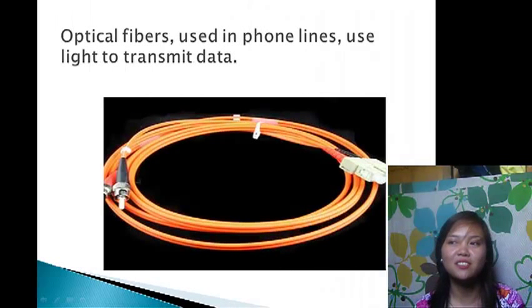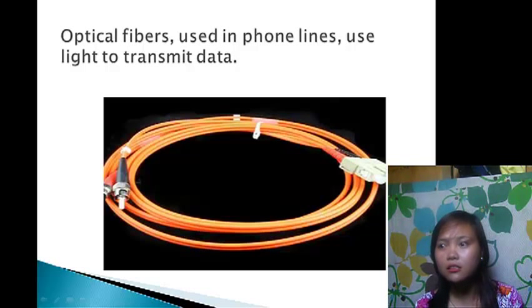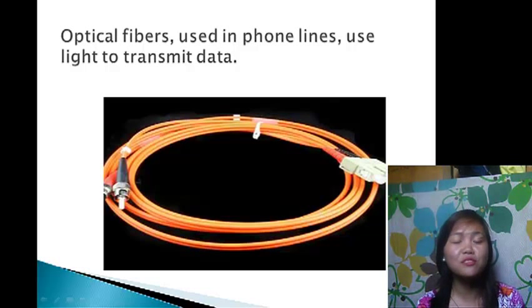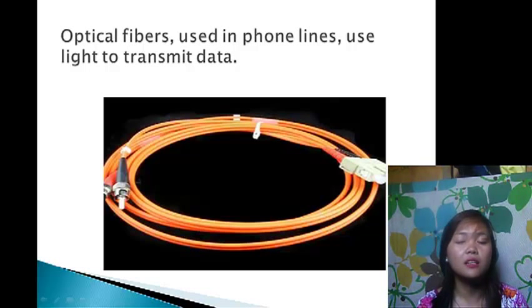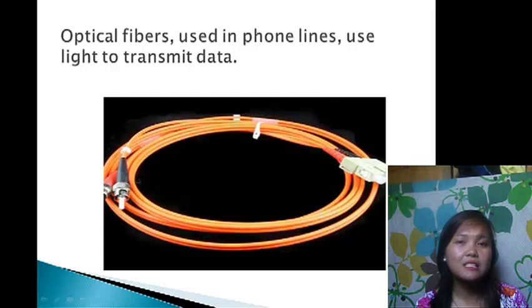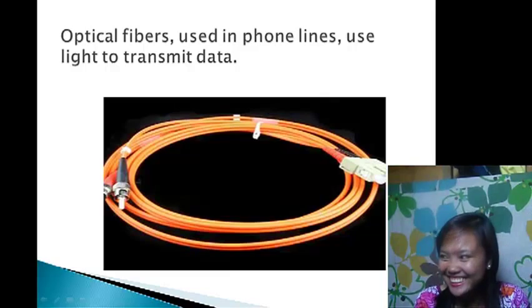Fiber optic cable uses light signals to transmit data, unlike electrical signals used in copper cables. Light only moves in one direction, so for two-way communication to take place, a second connection must be made between the two devices — it is actually two strands of cable, each responsible for one direction of communication. The advantages of fiber optics are that it is fast, has low attenuation, and no EMI interference. The disadvantages are that it is very costly and hard to install. Overall, fiber optics is the most reliable among the three types because it is the fastest.